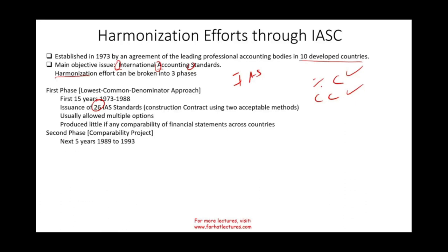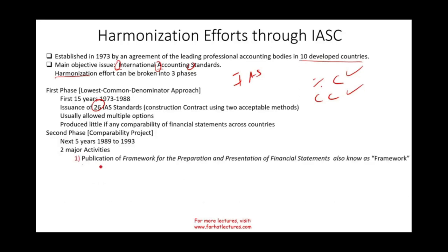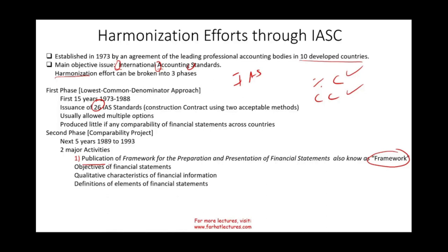The second phase took place from 1989 to 1993, with two major activities. First, they issued the publication of the Framework for the Preparation and Presentation of Financial Statements, also known as 'the framework.' In it, they discussed the objective of financial statements, the qualitative characteristics, the definition of financial statement elements, and the criteria for recognition of financial statements — topics we'll also look at when we discuss the IASB from an international perspective.